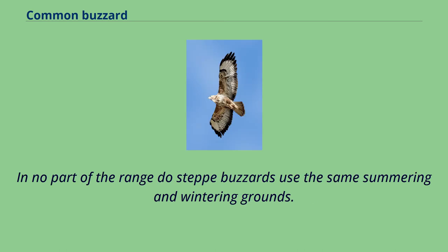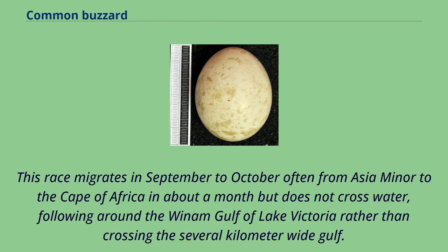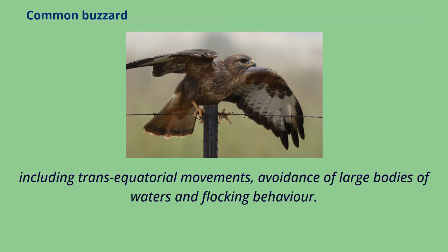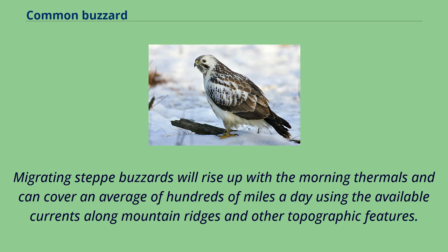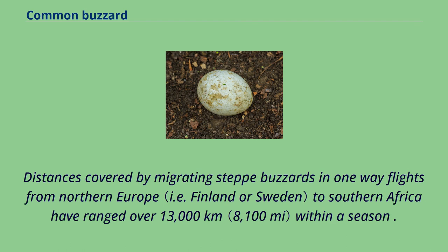Steppe buzzards are slightly gregarious in migration and travel in variously sized flocks. This race migrates in September to October, often from Asia Minor to the Cape of Africa in about a month, but does not cross water, following around the Gulf of Lake Victoria rather than crossing the several-kilometer-wide gulf. Similarly, they will funnel along both sides of the Black Sea. Migratory behavior of steppe buzzards mirrors those of broad-winged and Swainson's hawks in every significant way, including transequatorial movements, avoidance of large bodies of water and flocking behavior. Distances covered by migrating steppe buzzards in one-way flights from northern Europe to southern Africa have ranged over 13,000 kilometers within a season.